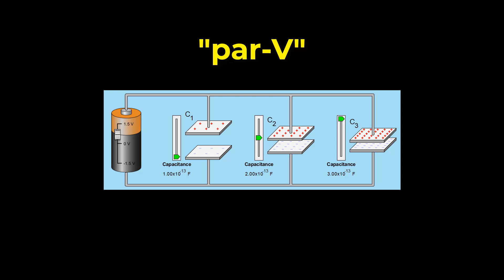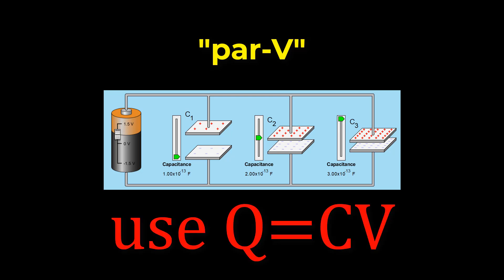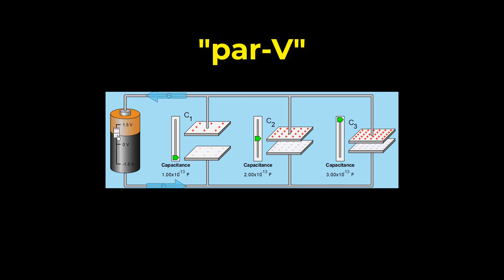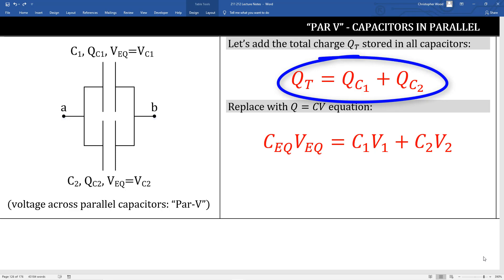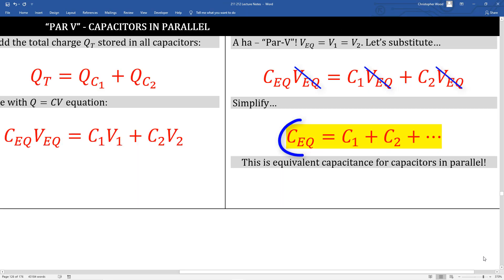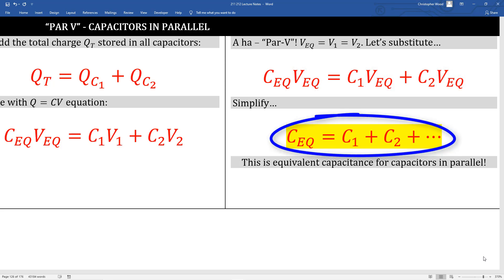Devices connected in parallel carry the same voltage. If I want to figure out the amount of charge on each capacitor, I just use the Q equals CV equation. As I change the battery voltage, the voltage across each capacitor changes but they all remain equal to each other. The capacitance remains unchanged, but the amount of charge on each capacitor not only changes — they are not necessarily equivalent; with these values, they definitely aren't equivalent. This is PARV. Here we say the total charge equals the charge stored in C1 plus the charge stored in C2. We again make use of Q equals CV, substitute an equivalent voltage because devices in parallel carry the same voltage, and this is the expression used to find the equivalent capacitance for capacitors connected in parallel.